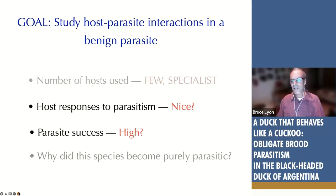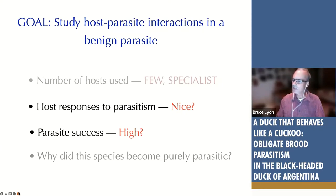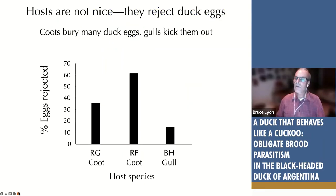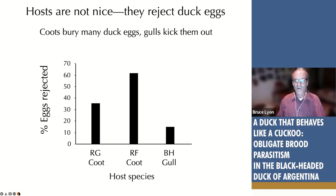The next two questions we'll answer together because the answers are connected. Recall we thought these are cute fuzzy babies that don't take any food from the coot, so hosts should be nice to them, and if hosts are nice, the parasite should have high hatching success. That's not what we found. The hosts are not nice — they actually reject duck eggs. Rejection rates range from about 33% for red-gartered coots up to 60% for red-fronted coots, with gulls lower.